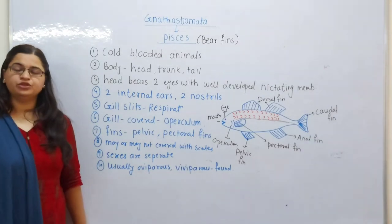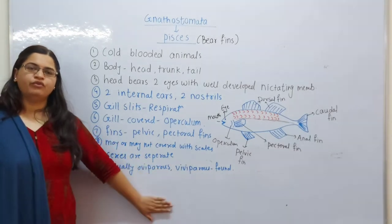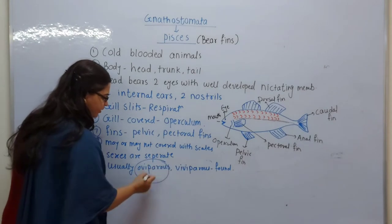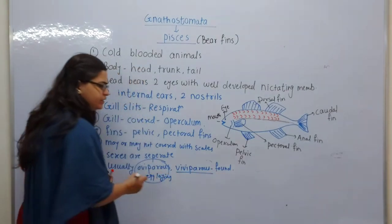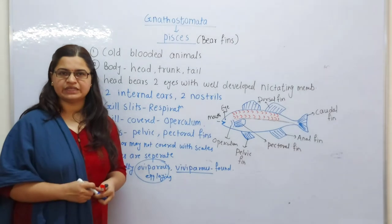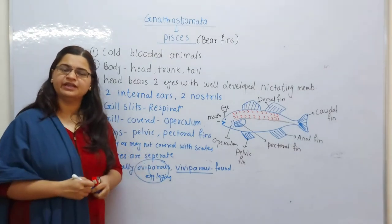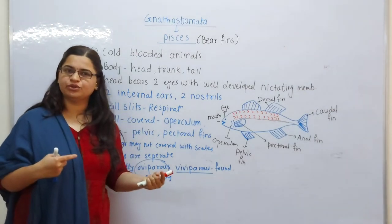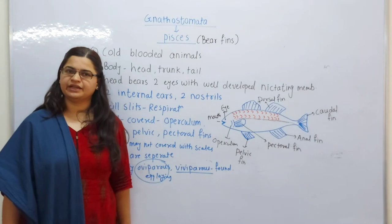Generally, sexes are separate in fish. They are usually oviparous or viviparous. Oviparous means egg-laying creatures — they lay eggs. Viviparous means they are not laying eggs but directly giving birth to young ones, like human beings. When young ones hatch from eggs, that condition is called oviparous. These are the basic characteristics of Pisces.